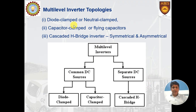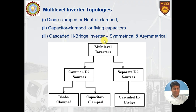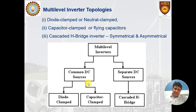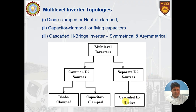There are three main topologies. The first is the diode clamped, also called the neutral clamped inverter. The second is the capacitor clamped, also called the flying capacitor. The third is the cascaded H-bridge inverter, which can be symmetrical or asymmetrical. The classification places diode clamped and capacitor clamped under a common DC source, while cascaded H-bridge uses separate DC sources.